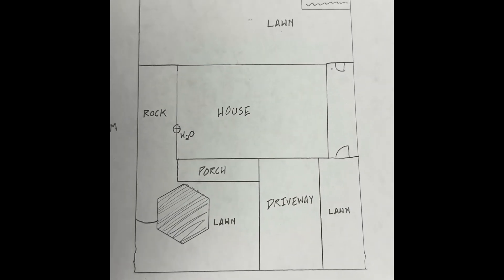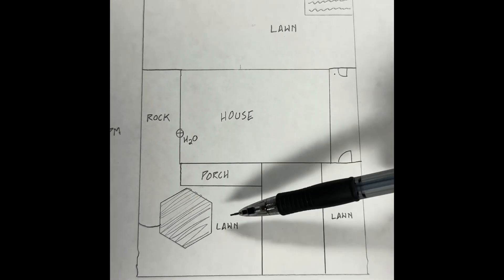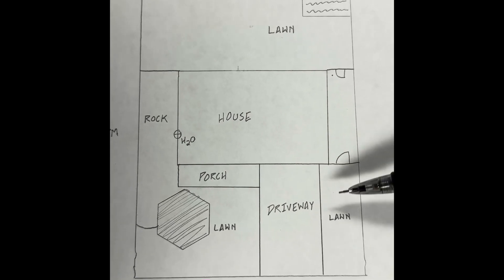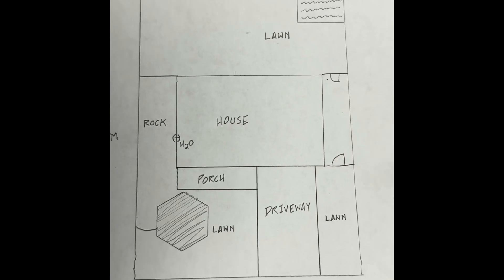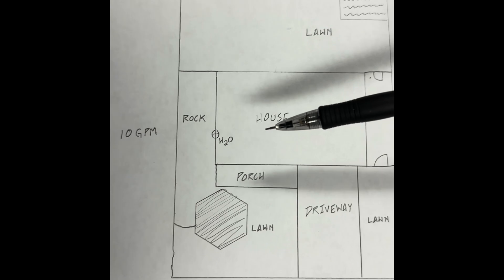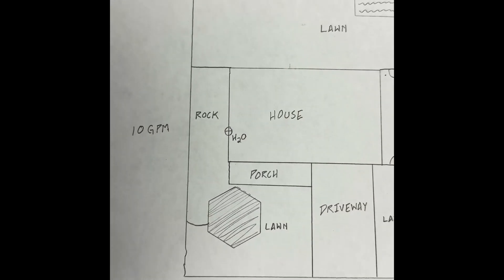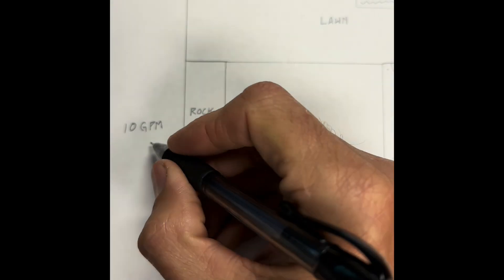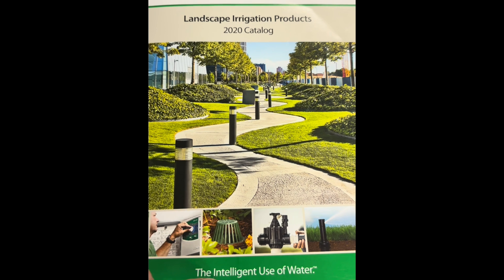So let's say this is your basic layout: you have your house in the middle, a front porch, a big tree in the front, some lawn, your driveway, a little piece of lawn, a fence, more lawn in the back, and maybe a garden. Our water supply is at the backflow and we know we're getting 10 gallons per minute. It's always better to go with about 80 percent of what you have, so we're going to plan our system for eight gallons per minute.